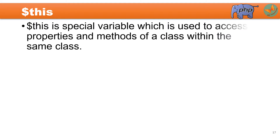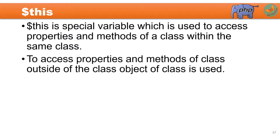Let us try to understand the use of dollar this. Dollar this is a special variable which is used to access the properties and methods of a class within the same class. If you want to access properties and methods of a class outside it, at that time we usually create an object. So dollar this is used within the class, and for outside the class we usually create objects.